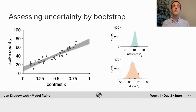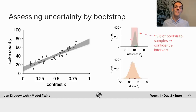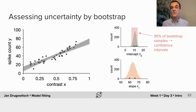We can now ask if we need this intercept or if we could set it to zero to get an equally good fit. To do so we look at the interval within which 95% of the bootstrap samples fall, which gives us the 95% confidence interval. We can see that this interval does not contain zero, which means that despite our uncertainty in the exact parameter values we can be confident that the intercept is significantly different from zero. So in this example we would conclude that a non-zero intercept is a required component to model the observed data.